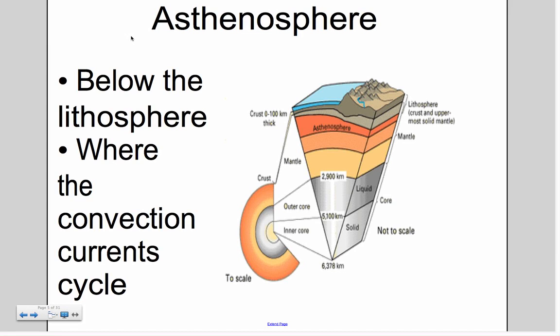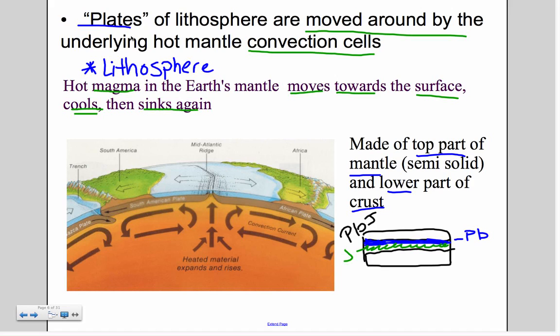The asthenosphere is just below the lithosphere. It's where the convection currents cycle. The plates of the lithosphere move around by the mantle's convection current cells. The lithosphere is where the magma in the Earth's mantle move towards the surface, and as the magma moves towards the surface, it cools off, and then it starts to sink again.